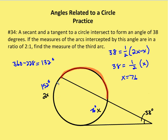So the measure of the third arc — which we can call arc AB — is going to be 132 degrees.